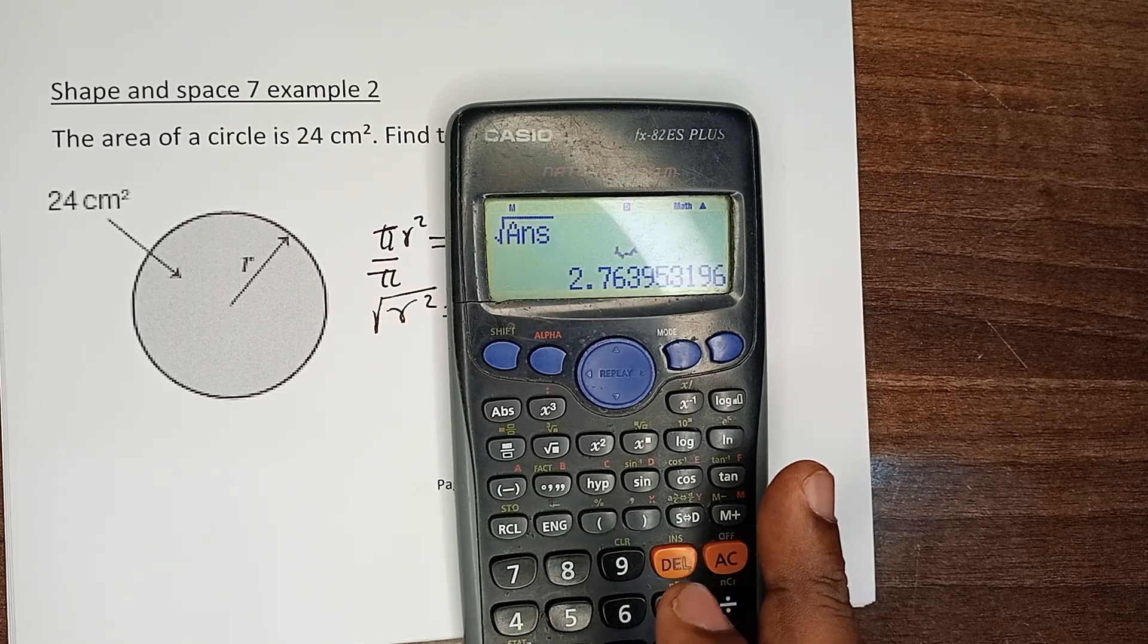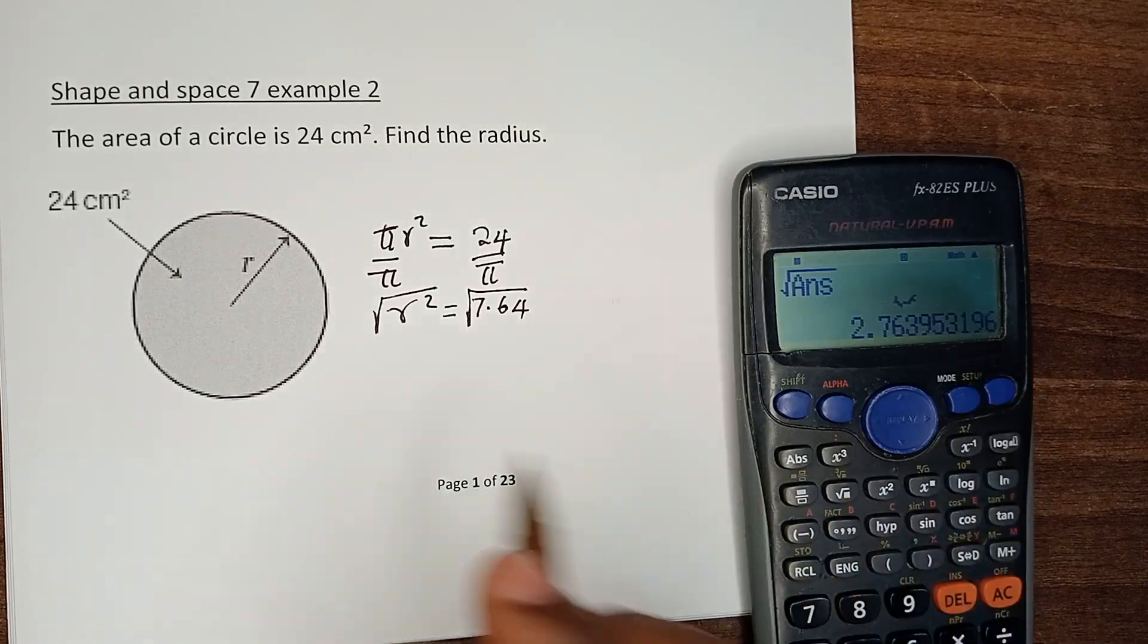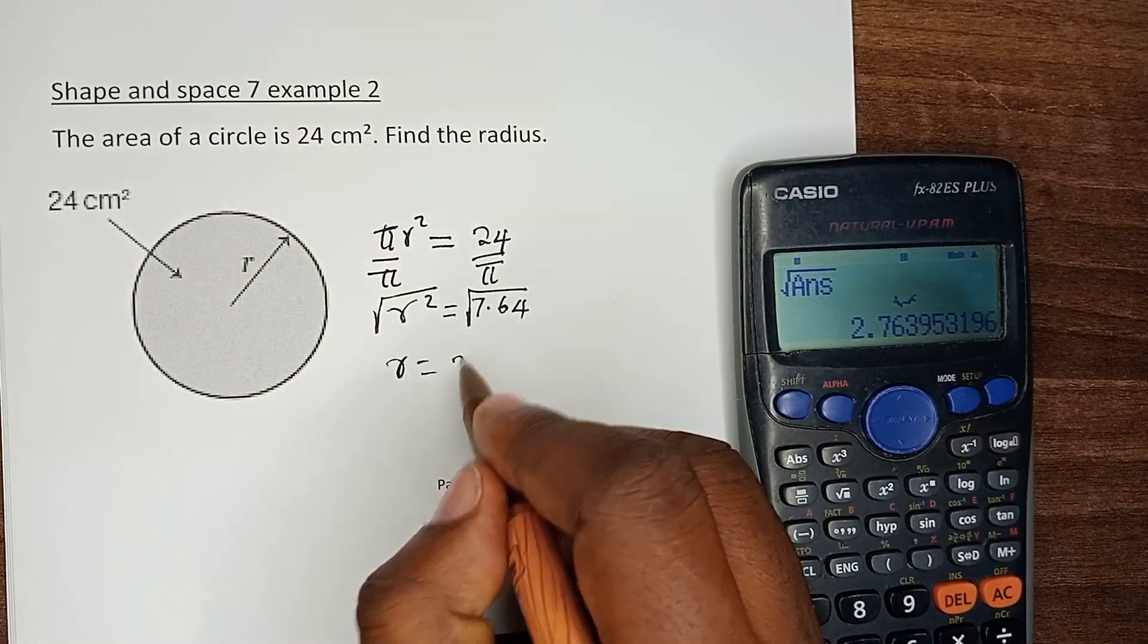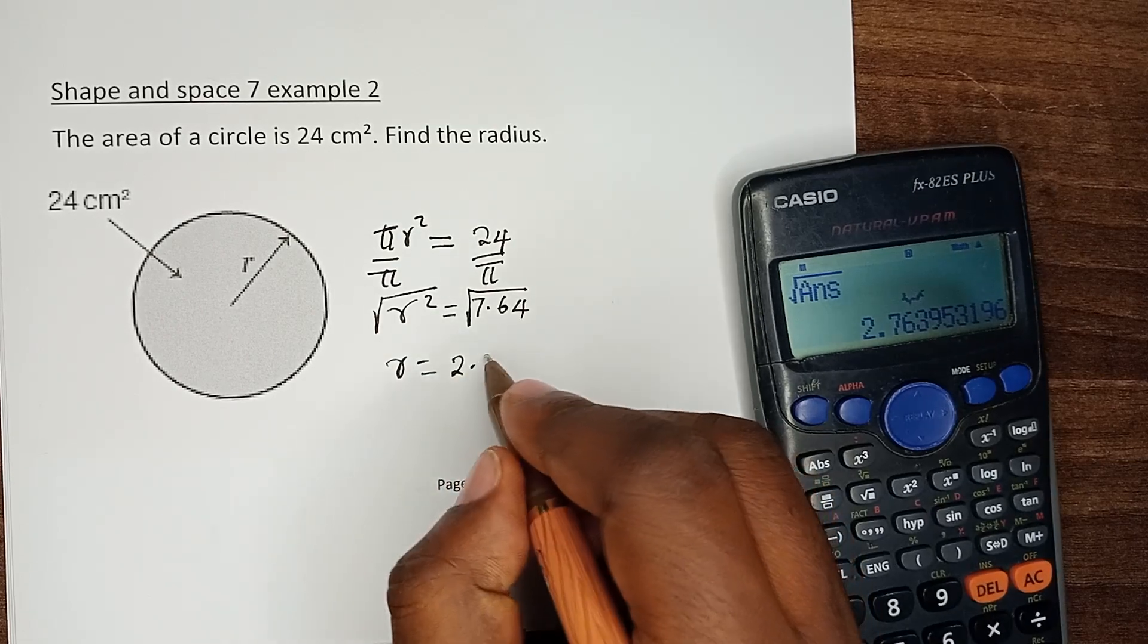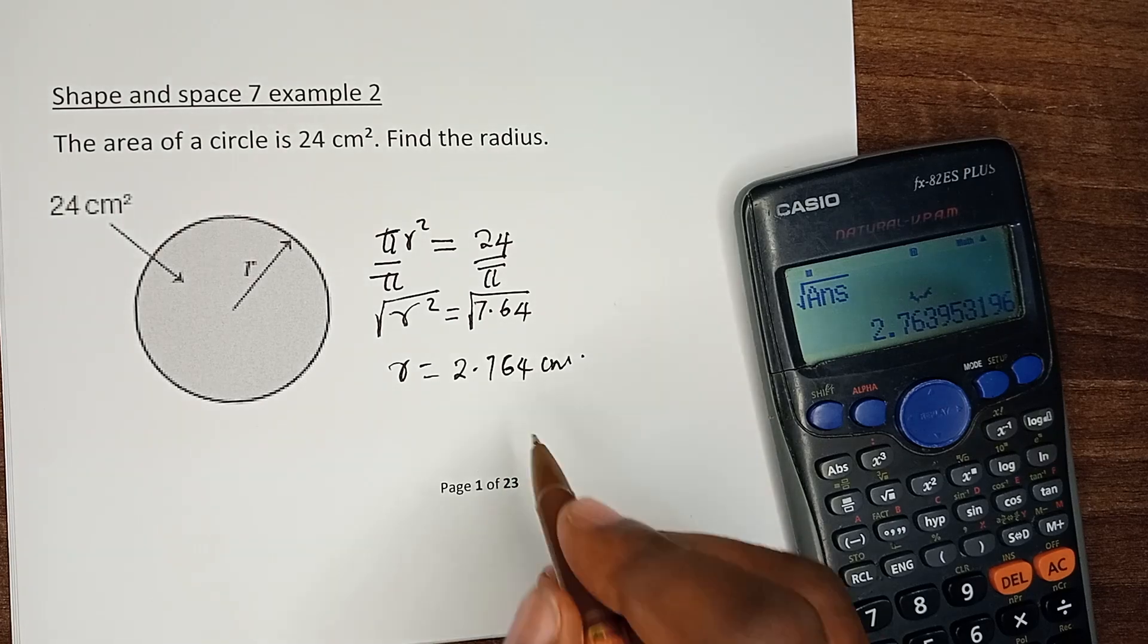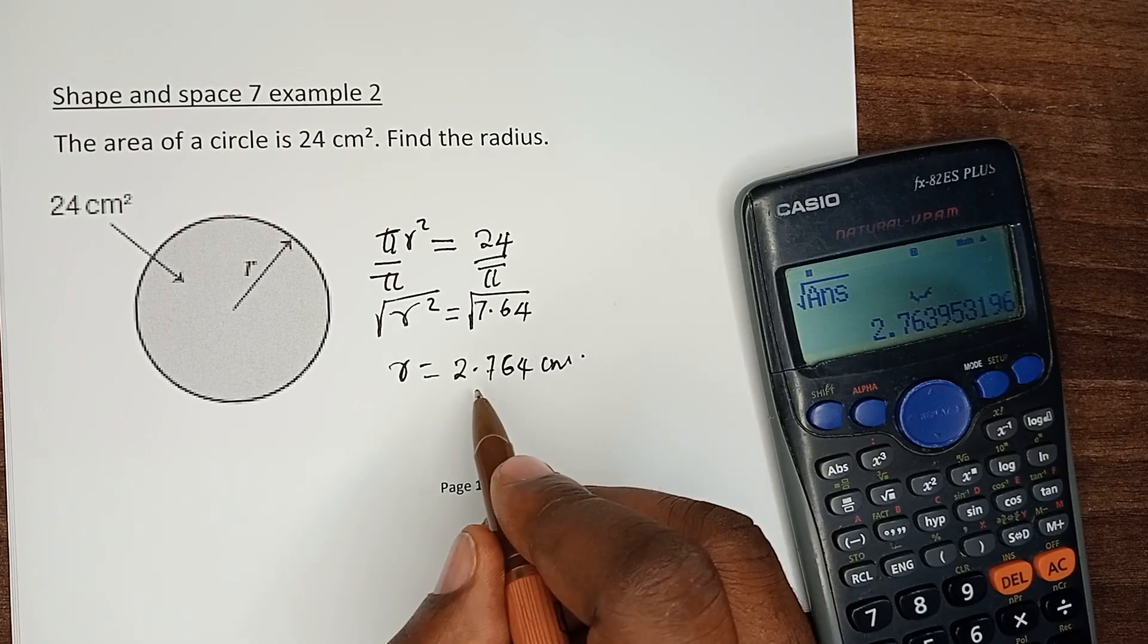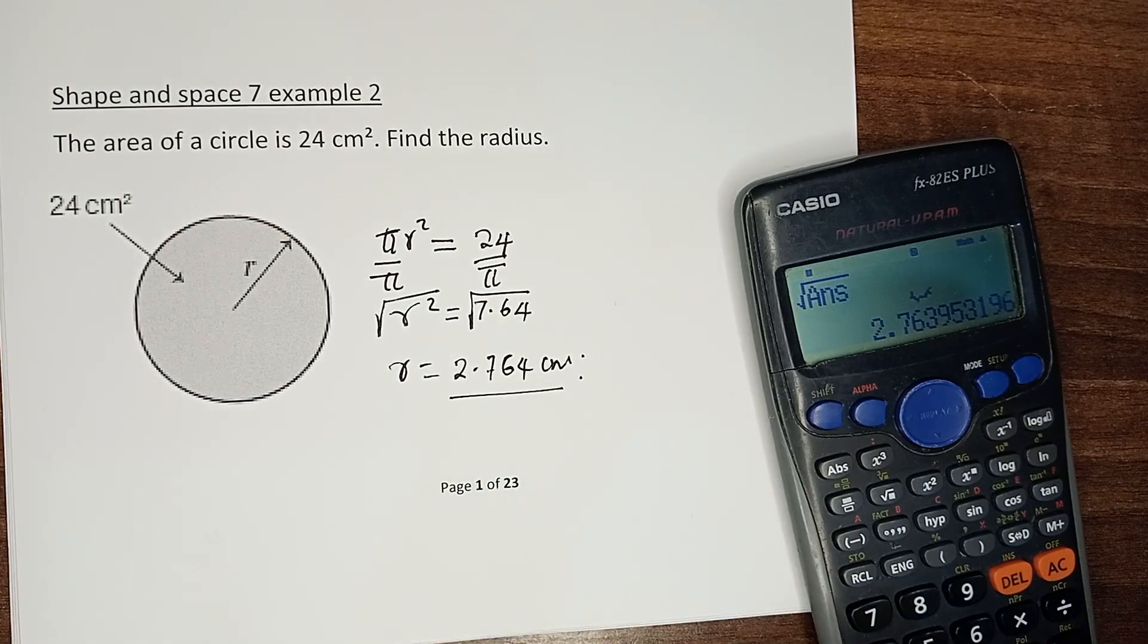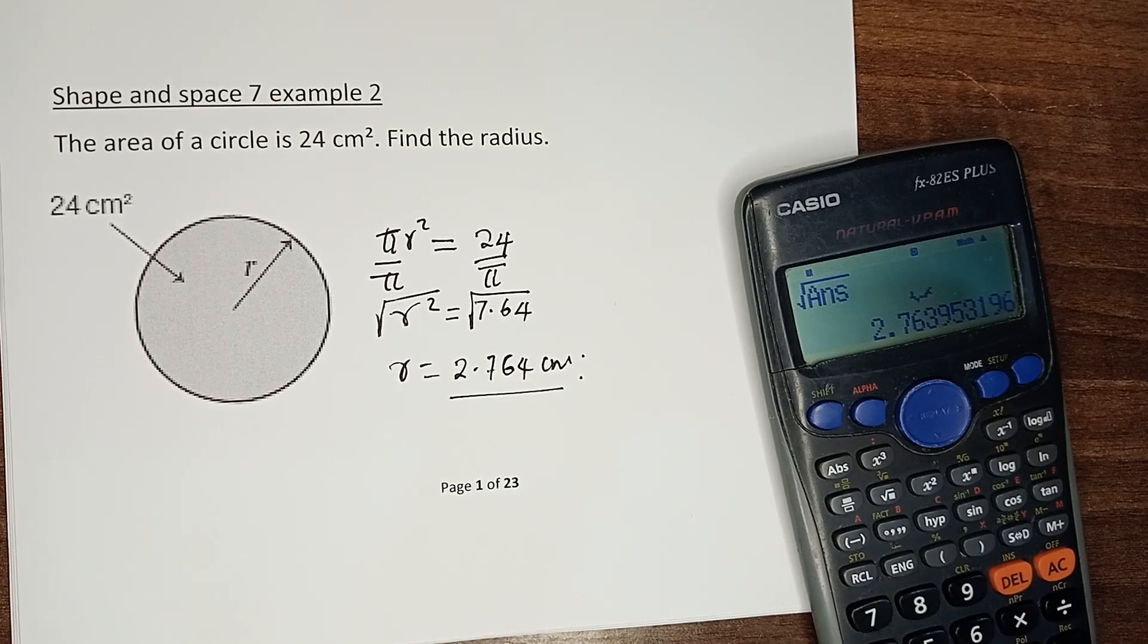So r is 2.764 centimeters to 3 decimal places, and that is our radius. Thank you.